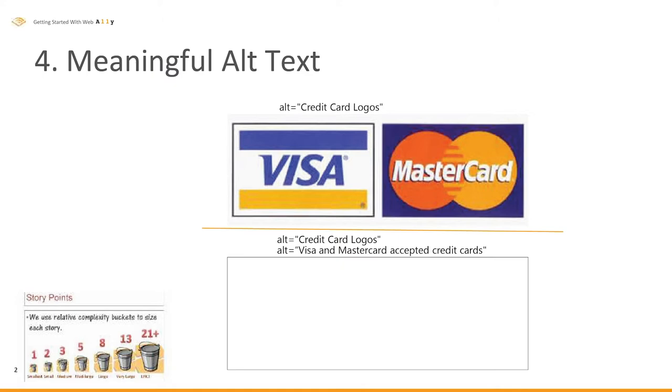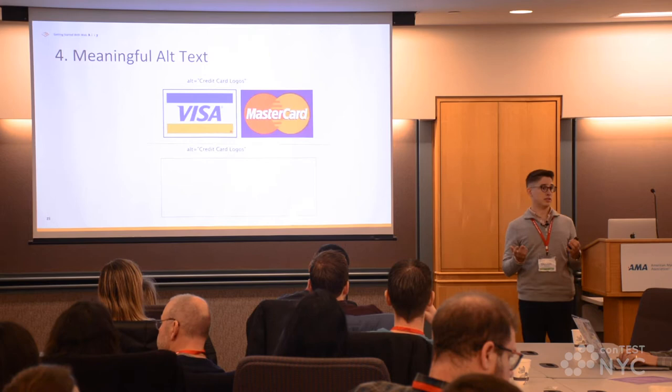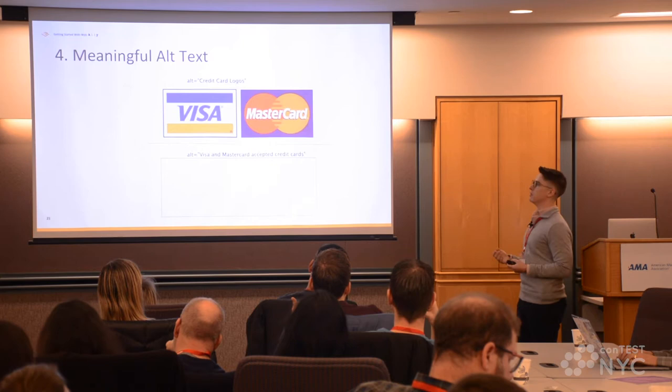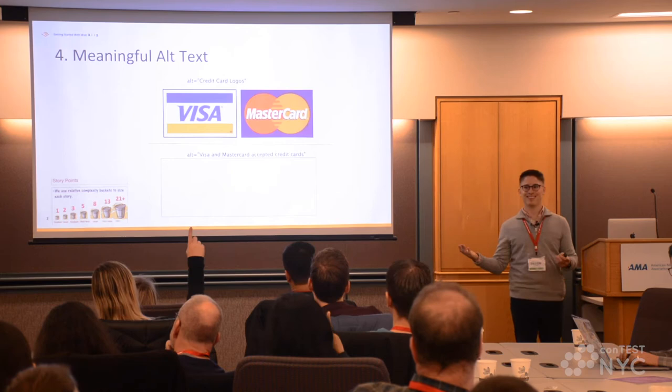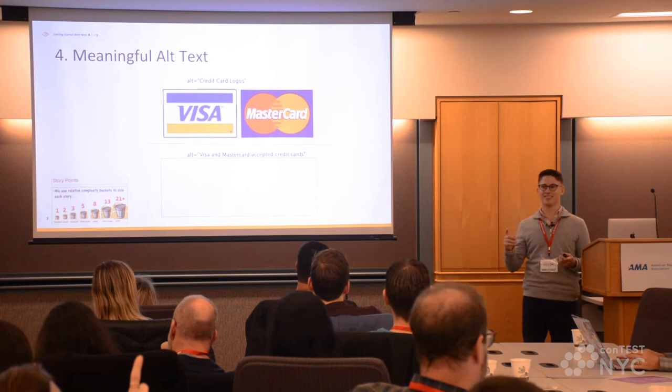Another issue is meaningful alt text. Sometimes alt text is missing. In this example, it looks like we have alt text and it says 'credit card logos.' Can anyone think why this would actually be an issue? It's not descriptive — which credit cards? Imagine this box doesn't load and you hover over it, or you're using a screen reader — 'credit card logos.' Something like 'Visa and MasterCard are the accepted cards on this website' would be much better. We really want to convey the same information through multiple means. How many points? Mostly ones — a very simple fix that would go a long way.